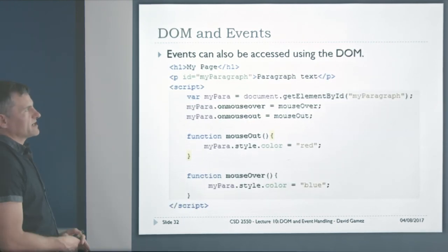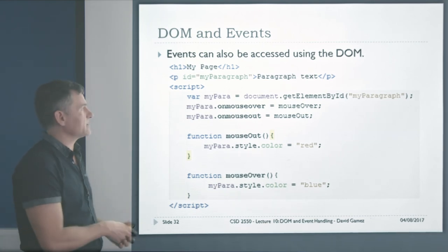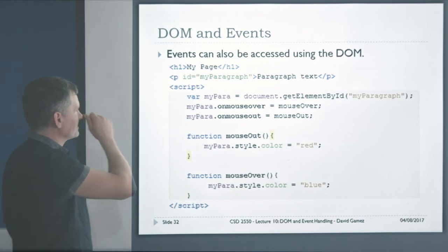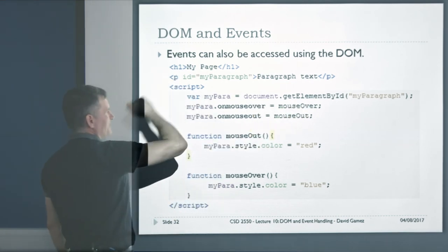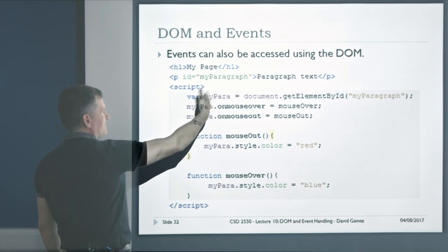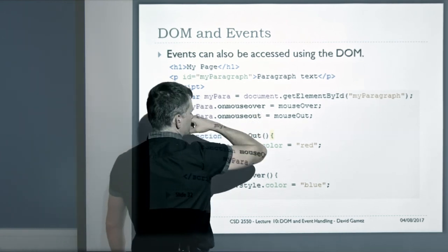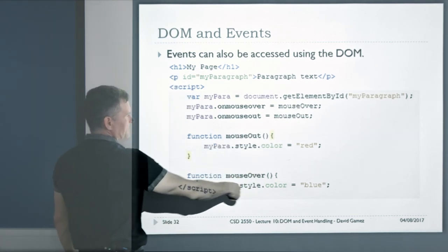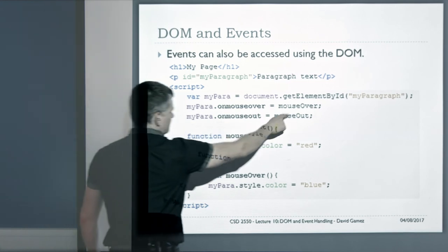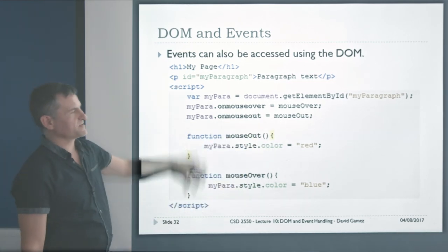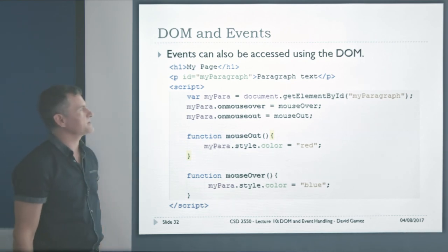A better way is to access events using the document object model and attach event handlers to HTML elements programmatically. Here we get a reference to a paragraph with a specific ID using getElementById, then we access the properties of the paragraph: myParagraph.onmouseover = mouseOver and myParagraph.onmouseout = mouseOut, pointing each event to a defined function. This is much better — it can be in a separate JavaScript file that attaches itself to the HTML, keeping functionality separate from markup.